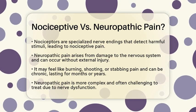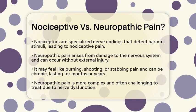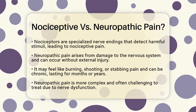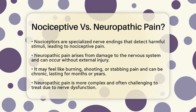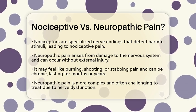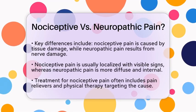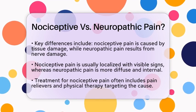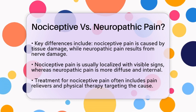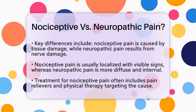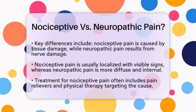The key differences between these two types of pain are important to understand. Nociceptive pain is caused by physical or chemical damage to body tissues, while neuropathic pain arises from damage to the nervous system. In terms of duration, nociceptive pain is generally temporary, while neuropathic pain can be long-lasting. Nociceptive pain is often localized and associated with visible signs of injury, whereas neuropathic pain is usually more diffuse and internal.